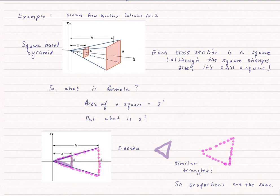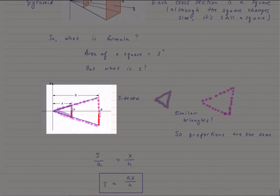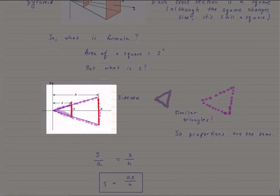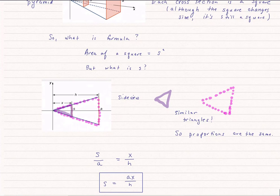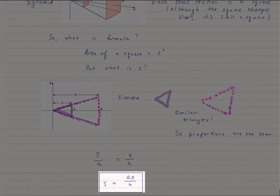So these are similar triangles. That means proportions are the same. So if I compare s and a, that is the two bases of the pyramid, and if I compare x and h, that is the height of that pyramid, then I see that s/a equals x/h. And if I solve for s, I get that s equals ax/h.